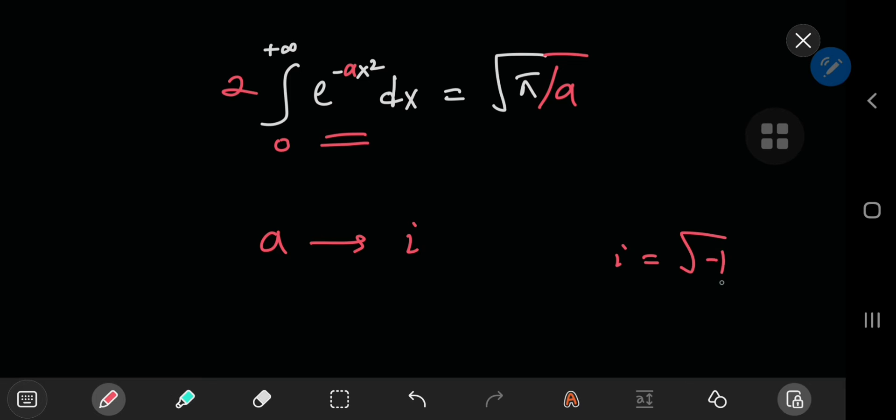what were to happen if I replace a by the imaginary unit i, where i is the square root of negative one?